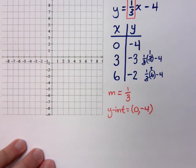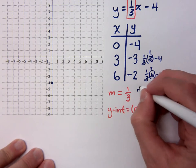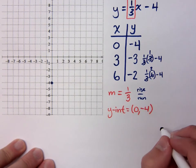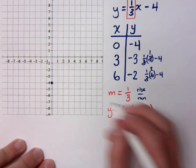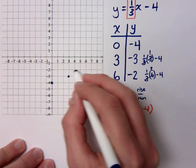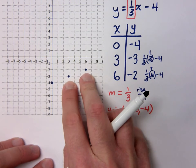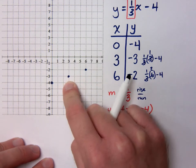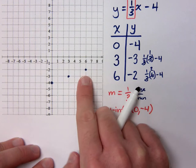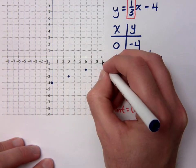So if I plot these points, I've got (0, negative 4). Using the slope as rise over run — a rise of 1 and a run of 3 — I land on the next point, and again up 1 over 3 from there. Notice how these match the ordered pairs from the t-table: (3, negative 3) and (6, negative 2).